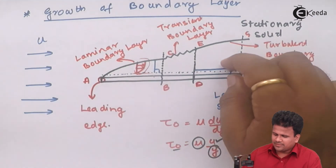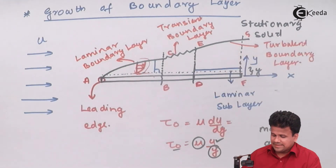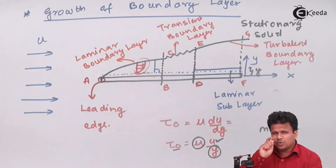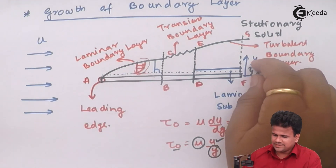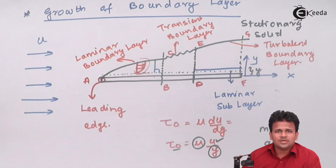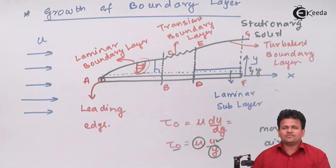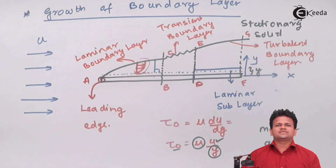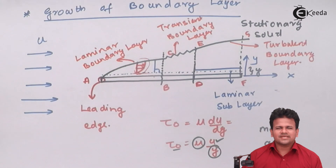In the laminar sub-layer, the velocity remains constant for a small thickness y. I hope you have understood what is the growth of boundary layer as well as the definition of boundary layer thickness. Thank you.